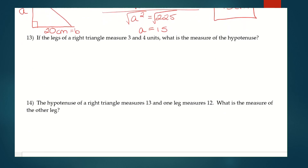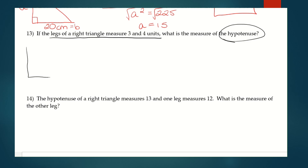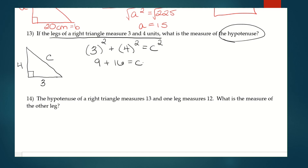Number thirteen: if the legs of a right triangle measure three and four units, what is the measure of the hypotenuse? A squared plus B squared equals C squared — nine plus sixteen equals C squared. Nine plus sixteen is twenty-five, and taking the square root gives C equals five. The hypotenuse is five units.